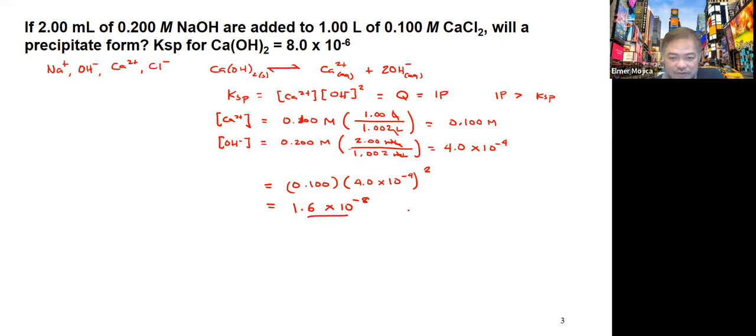Since this value, your ion product or Q, is less than the Ksp, we could say there's no precipitate formed.